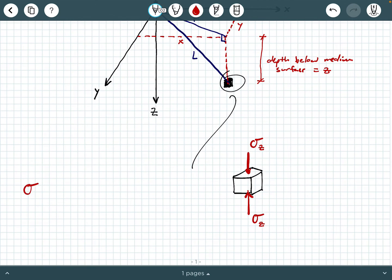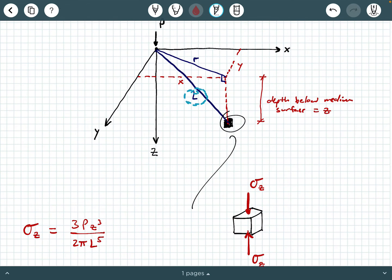So the way we're going to compute this is the following, we're going to say sigma sub z equals 3p z cubed divided by 2 pi L to the fifth power. Now, we can express this L value in terms of this radial distance at the ground surface, r, and the depth, z.